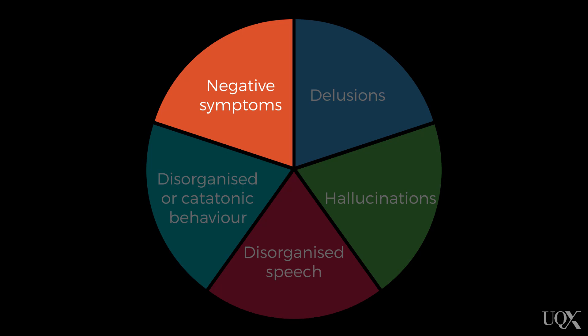So far we have covered the positive symptoms of schizophrenia. Now we have come to the last of the five symptom sets: the negative symptoms. Remember, these symptoms reflect normal behaviours that are actually in deficit. It's the fact that these behaviours are not occurring enough that's the problem, rather than the behaviours occurring too much.